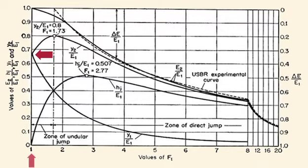For F sub 1 greater than 3, the changes in all characteristics are gradual and monotonic.